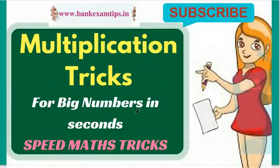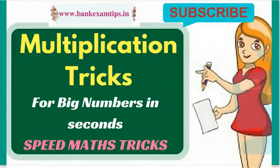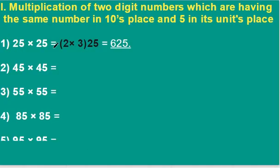Now I am sharing some speed math tricks on multiplication which helps us to do faster calculations while solving quant problems and data interpretation. For more updates and videos on bank exams, please subscribe so that we can send you updates directly into your mail. See these numbers — for multiplying numbers which have the same digit in the tens place and 5 in the units place, we can use this trick.